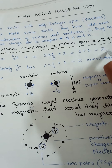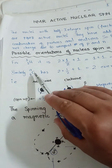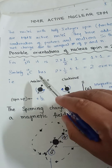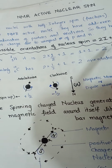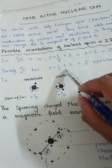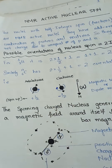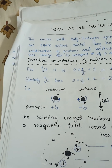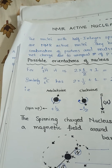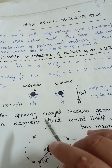For carbon-13 with I = 1/2, there are again two orientations: clockwise and anti-clockwise. If we have an integer nuclear spin quantum number like I = 1, then 2I + 1 = 3 orientations: clockwise, anti-clockwise, and a third perpendicular to these two spins.